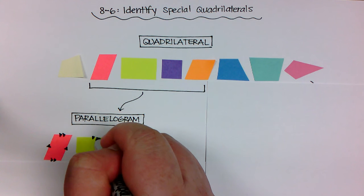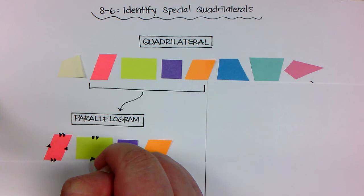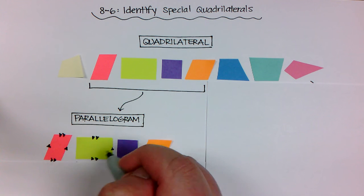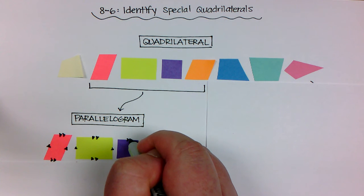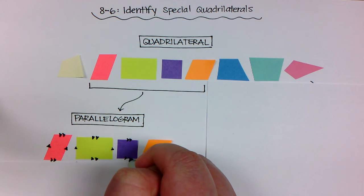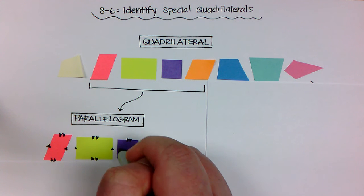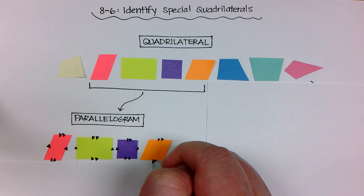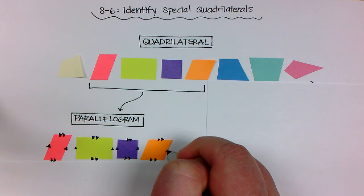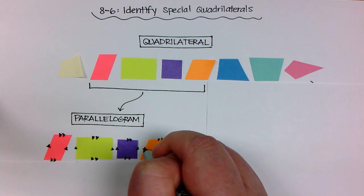That would be a parallelogram, same with this green one, with the purple one, and with the orange one. So all four of these would be considered parallelograms.